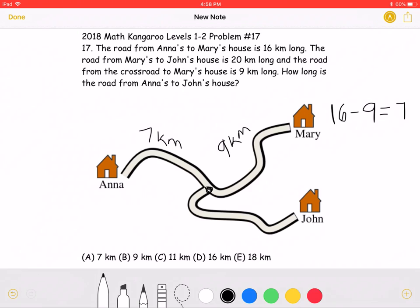The problem also states that the distance from Mary's to John's house is 20 kilometers. This means that 20 minus 9, which is 11, is the distance from the crossroads to John's house.